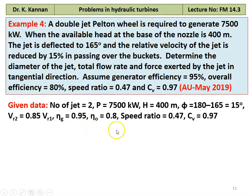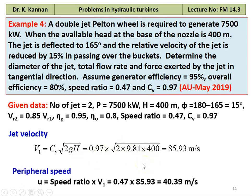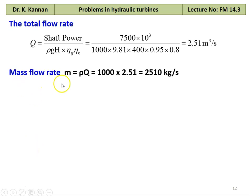Jet velocity V1 = 0.97 × √(2 × 9.81 × 400) = 85.93 m/s. Peripheral speed U = 0.47 × 85.93 = 40.39 m/s. Total discharge Q = shaft power / (ρGH × generator efficiency × overall efficiency) = 7500 × 10³ / (1000 × 9.81 × 400 × 0.95 × 0.8) = 2.51 m³/s. Mass flow rate M = ρQ = 1000 × 2.51 = 2510 kg/s.